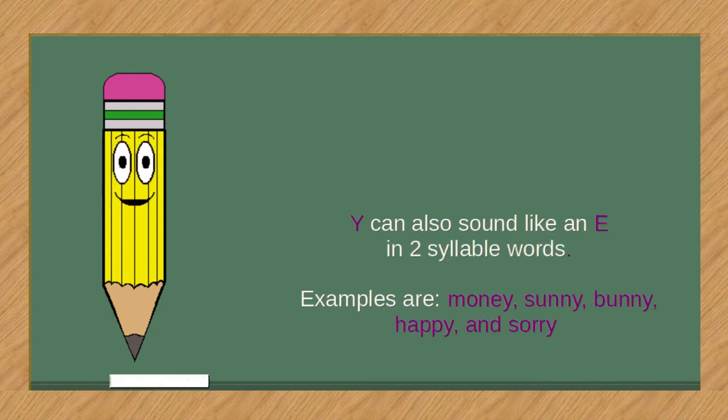Y can also sound like an E in two-syllable words. Examples are money, sunny, bunny, happy, and sorry.